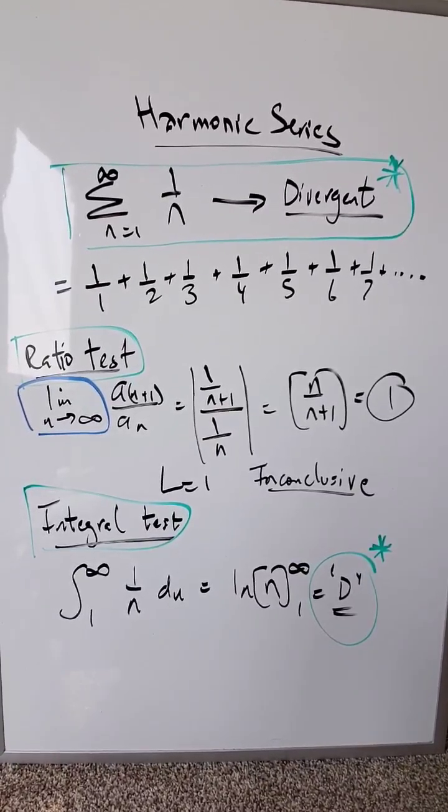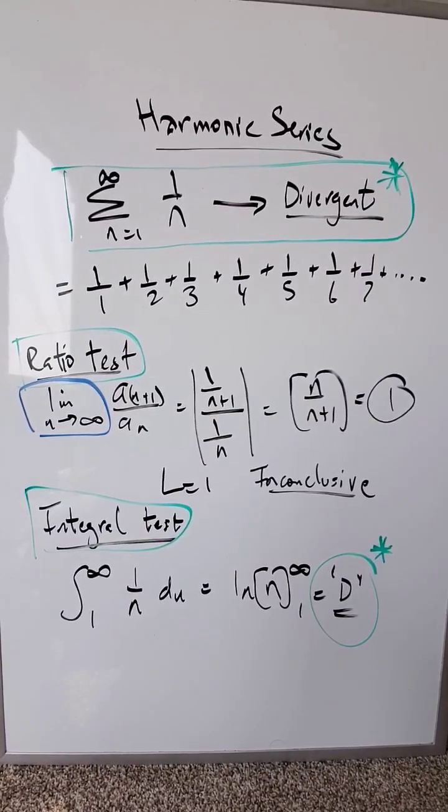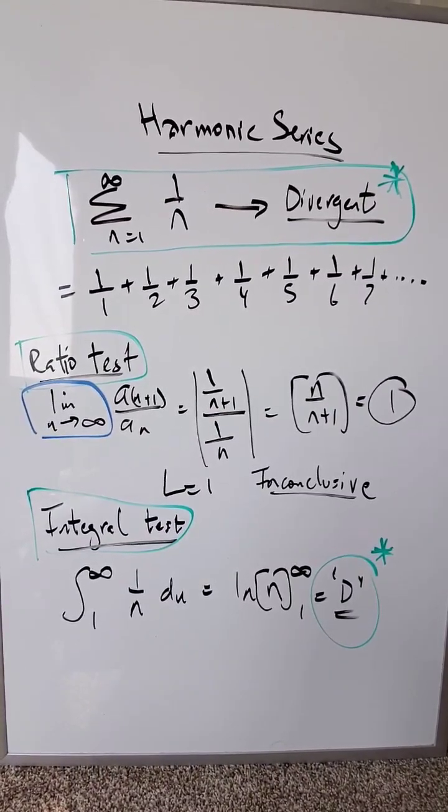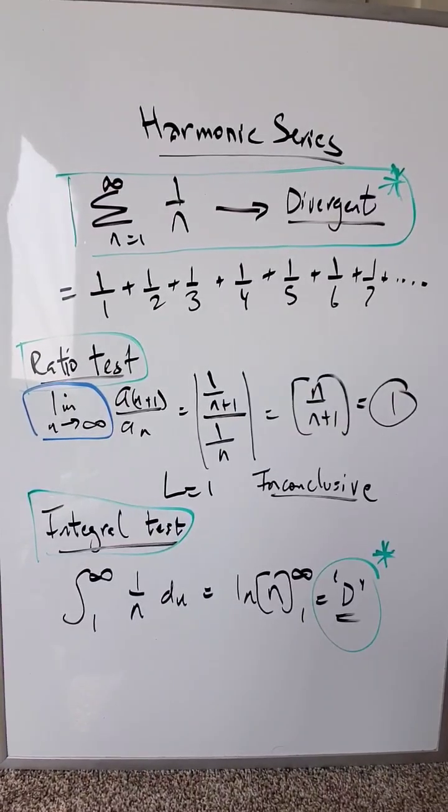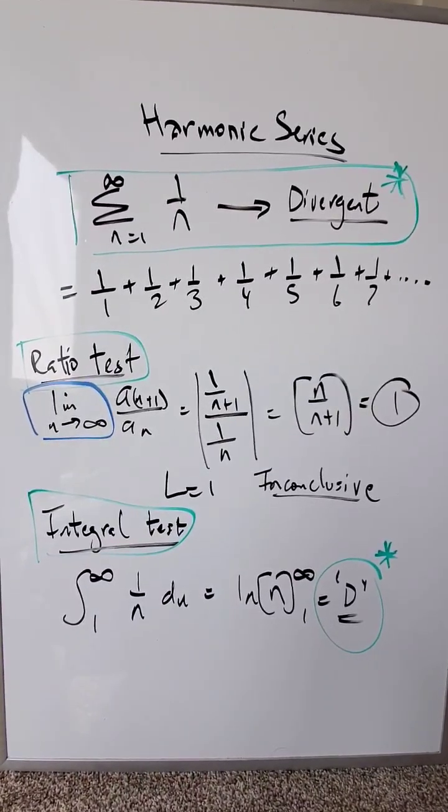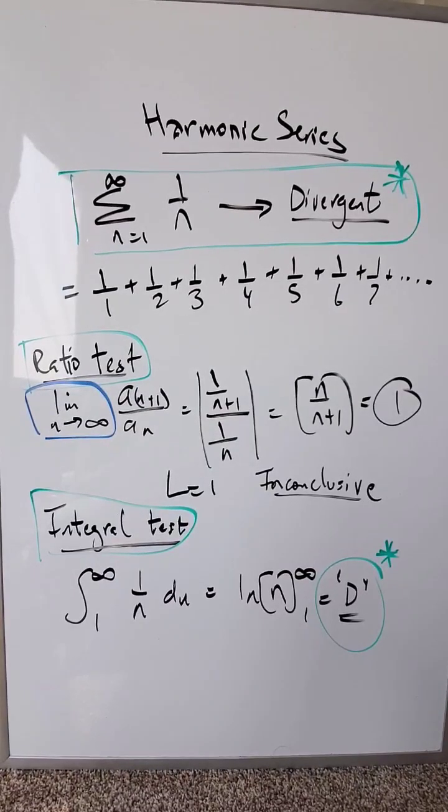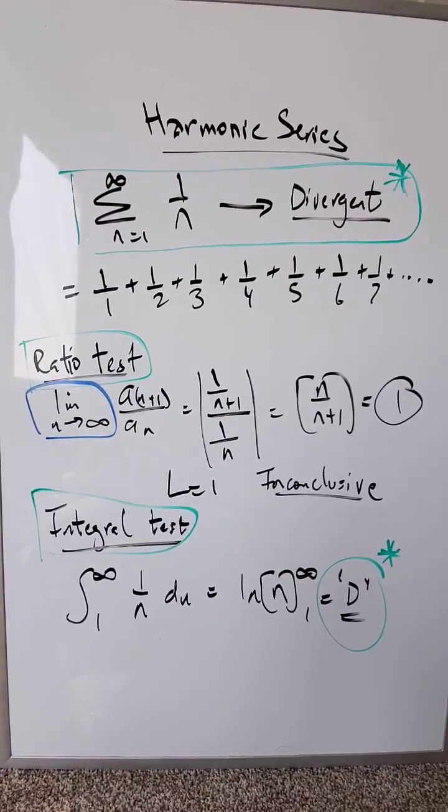which is a limit evaluation. As n approaches infinity, you're looking at the a_n+1 term divided by the a_n term. That limit evaluation leads to a value of 1, which based on D'Alembert's ratio test represents an inconclusive test result.